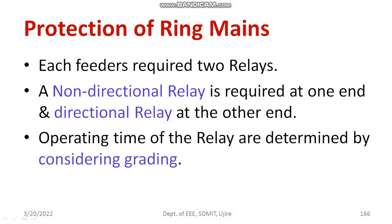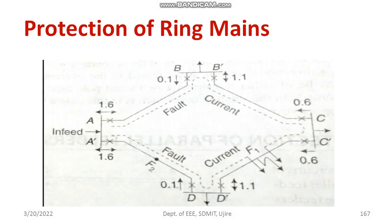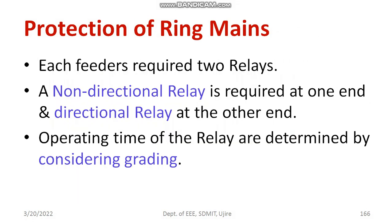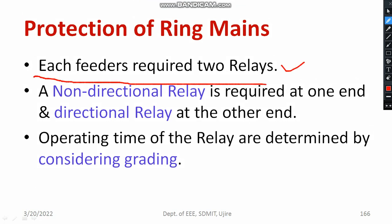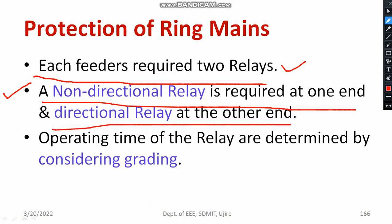Regarding ring mains — ring mains is also a very important segment of the distribution system. If I talk about the distribution system, ring mains, service mains, and feeders are very essential segments. Now how to ensure the protection of ring mains? In ring mains, feeders are included. Each feeder requires two relays — one should be directional and another should be non-directional. A non-directional relay is required at one end and the directional relay is required at the other end. The operating time of the relays is determined by considering what kind of grading is employed. This is the basic information about protection of ring mains.